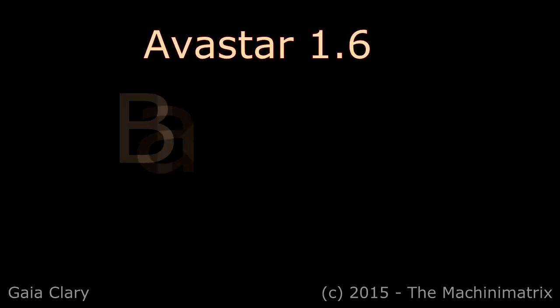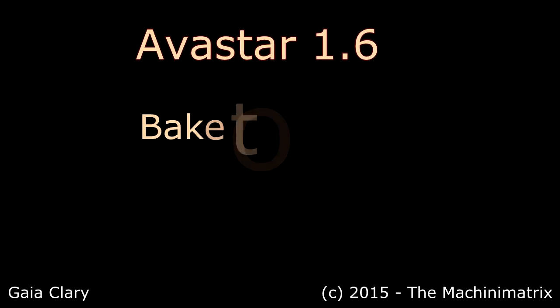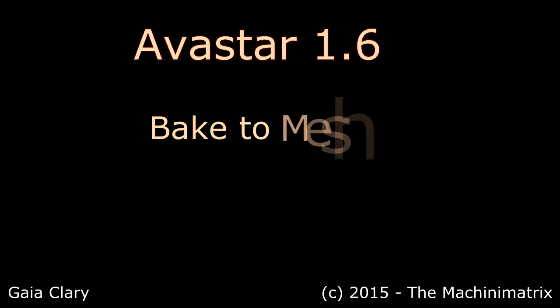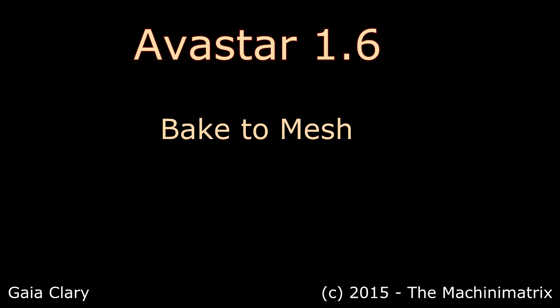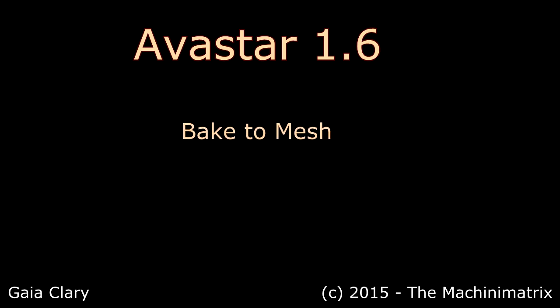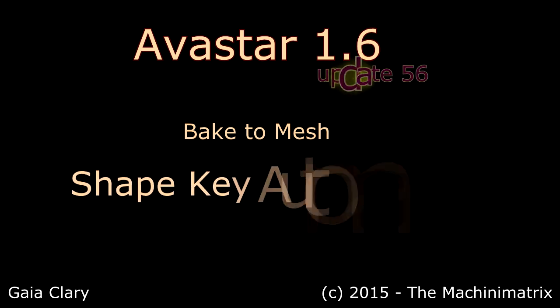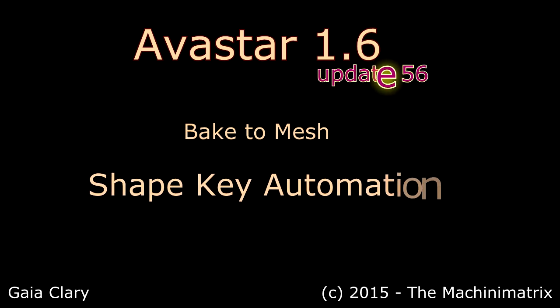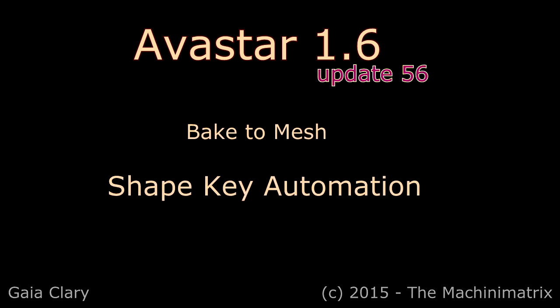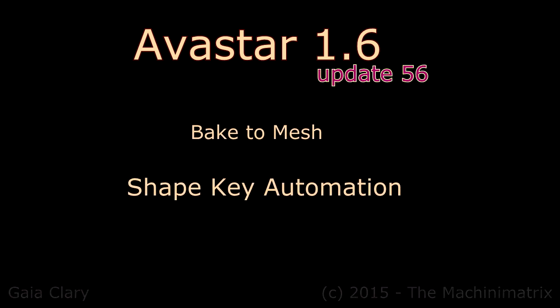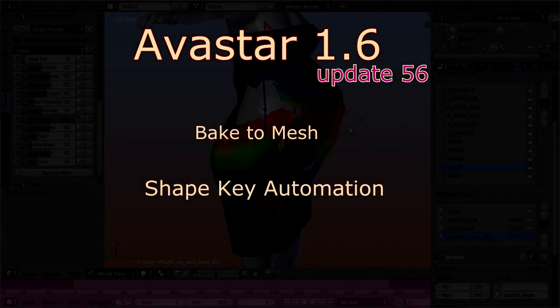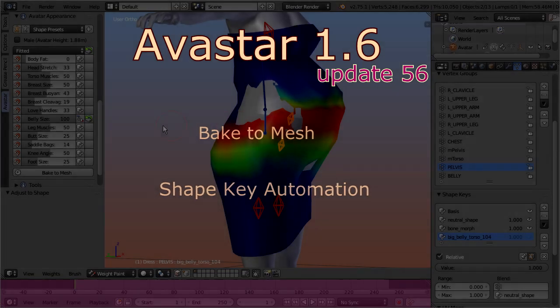In this video we introduce two new Avastar tools. The bake to mesh tool propagates shape key configurations directly into the mesh, and the shape key automation tool allows to attach shape keys to appearance sliders.